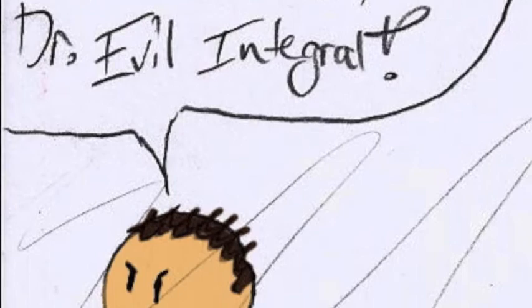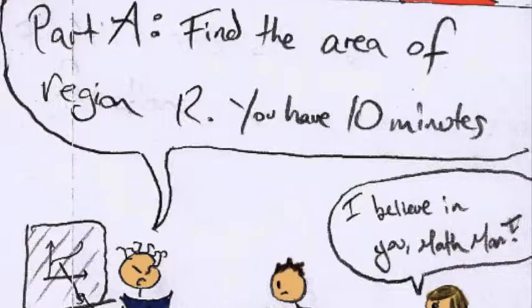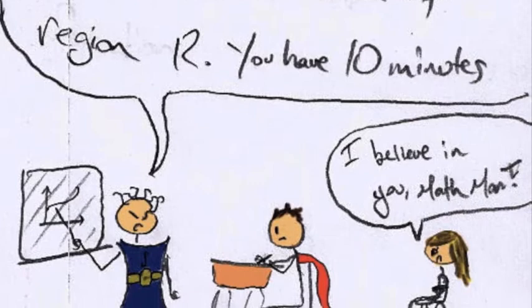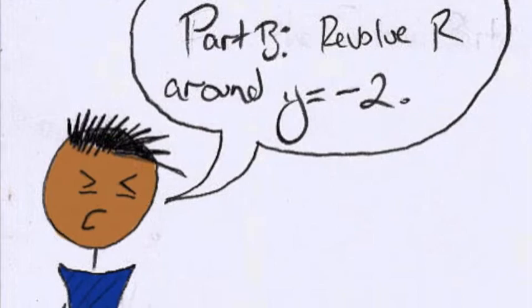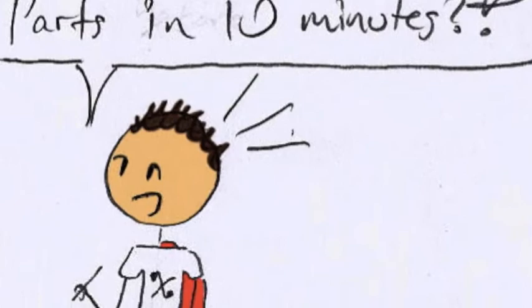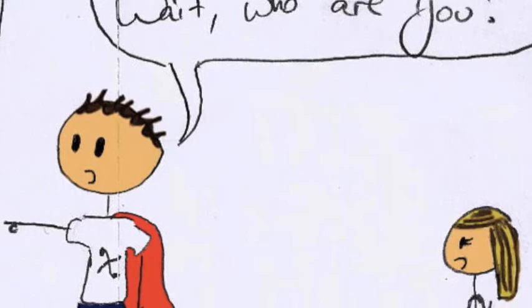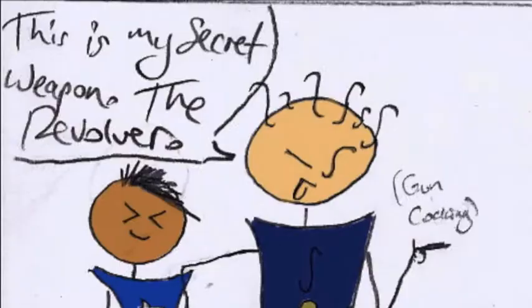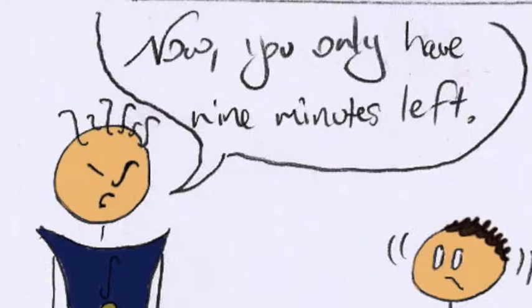Prepare to lose, Dr. Evil Integral. Math Showdown! Part A, find the area of region R. You have ten minutes. I believe in you, Math Man! Part B, revolve R around Y equals negative two. I have to finish both parts in ten minutes? Wait, who are you? This is my secret weapon, the revolver. Now you only have nine minutes left.